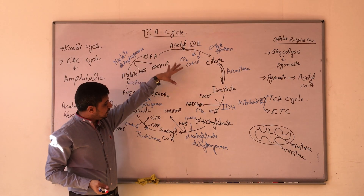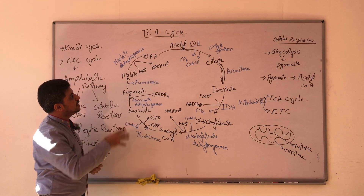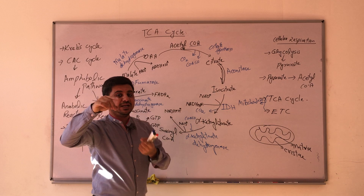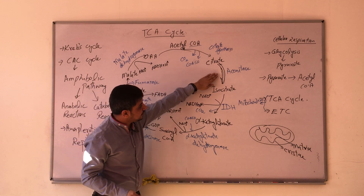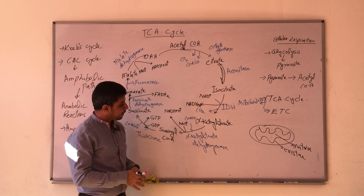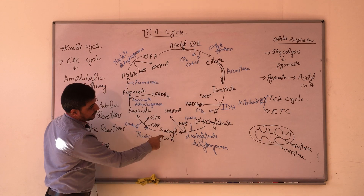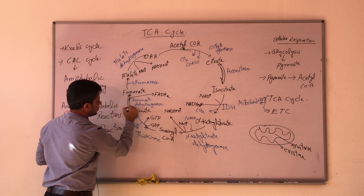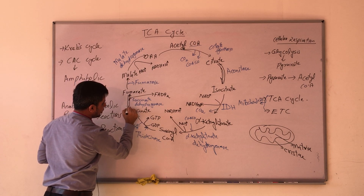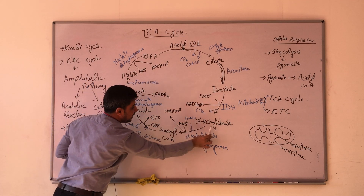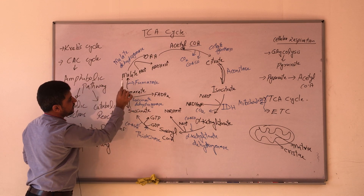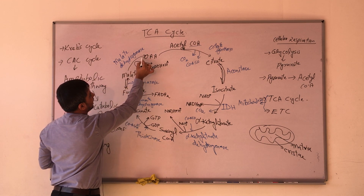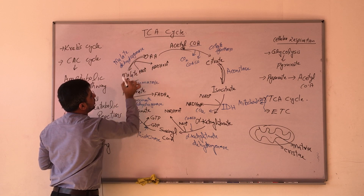Now remember the reversible and irreversible reactions of the TCA cycle. Reaction one — citrate synthase — is irreversible. The aconitase reaction is reversible. The three reactions involving isocitrate dehydrogenase, alpha-ketoglutarate dehydrogenase, and thiokinase are irreversible. The succinate dehydrogenase step is also irreversible. The fumarase and malate dehydrogenase reactions are reversible. So four reactions total are irreversible and the remaining are reversible.